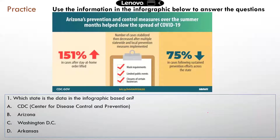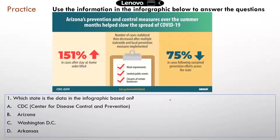Here is a practice question — you can pause the video and try to answer it. So you can see this is an infographic with some text and some numbers. The most important part is: if there's a title, you need to read the title, because it tells you what the infographic is about. This infographic is about the results or outcome of Arizona's prevention and control measures implemented over the summer months — specifically whether these measures slowed down the spread of COVID or not.